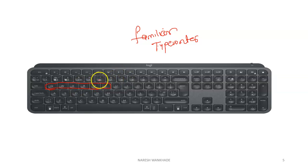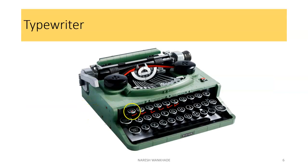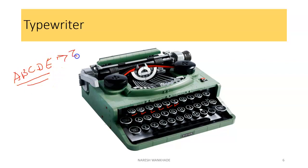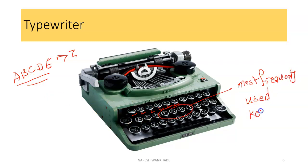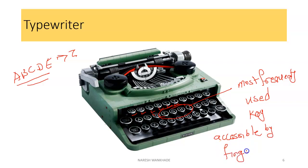Now our next question is: why is the pattern QWERTY? Why not A, B, C, D, E — since the alphabet sequence is A, B, C, D up to Z — so why are the keys not arranged in that order? This is because the most frequently used keys are placed at the center point, that is, the location accessible by our fingers. The most frequently used keys must be accessible easily.